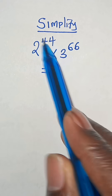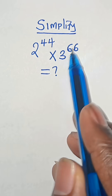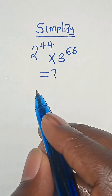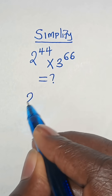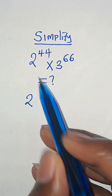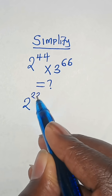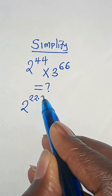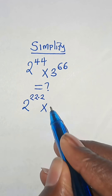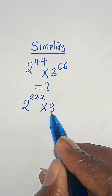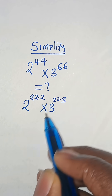Simplify 2 to the power of 44 times 3 to the power of 66. Now, we can express 2 to the power of 44 as 2 to the power of 22 times 2, multiplied by 3 to the power of 22 times 3.